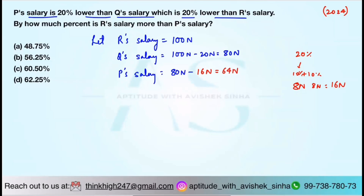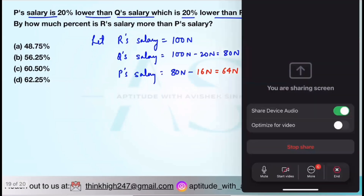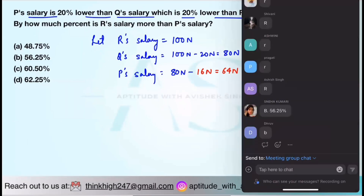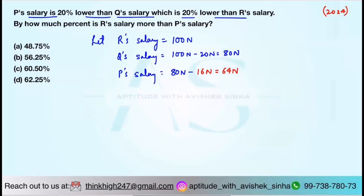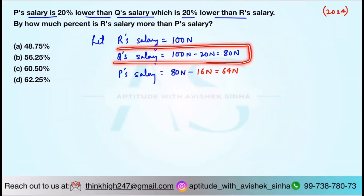What do you have to follow, everyone? Is everything clear here? Please confirm. A student asks: can you repeat that P salary part again — 80N minus 16N? Okay, I'm telling you again. Is everything clear here about Q's salary? Yes, that's clear.